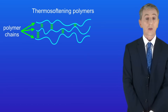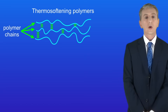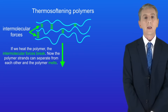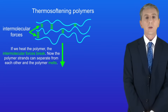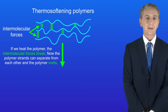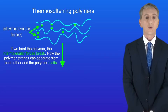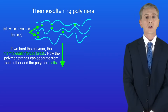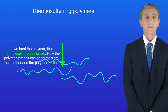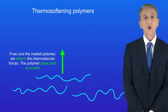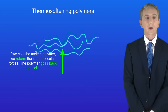I'm showing you here the structure of a thermosoftening polymer, with the polymer chains shown in blue. In thermosoftening polymers the polymer chains are held to each other by intermolecular forces. If we heat the polymer the intermolecular forces break, the polymer strands can separate from each other, and the polymer melts. If we cool the melted polymer we reform the intermolecular forces and the polymer goes back to a solid.